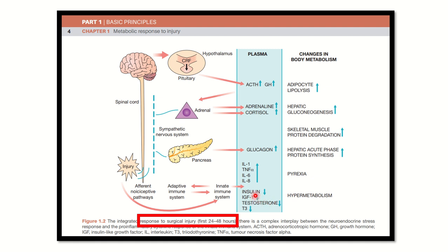Some important parameters are reduced, such as insulin, insulin-like growth factor 1, testosterone, and T3. All other parameters increase. It is easy to remember: any fuel material increases — the end products such as glucose, amino acids, and fatty acids are increased, as large molecules like glycogen, lipids, and muscle protein are broken down and released into the blood, ready for use.